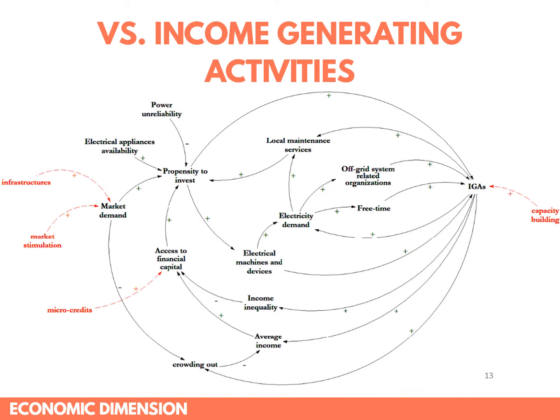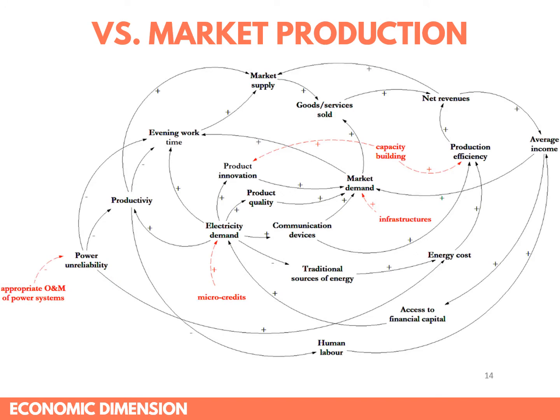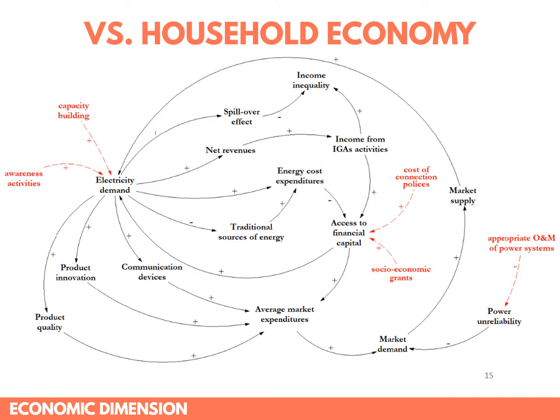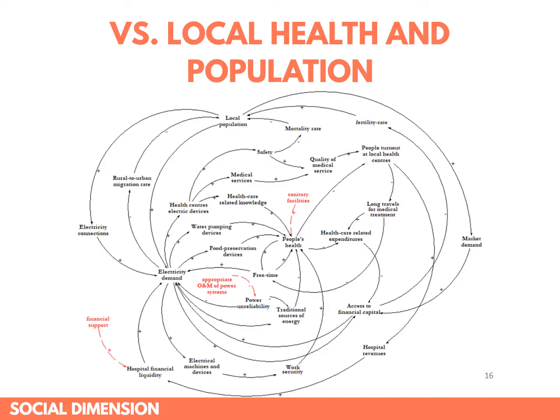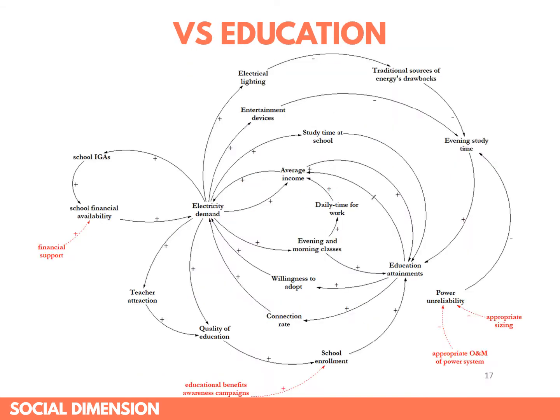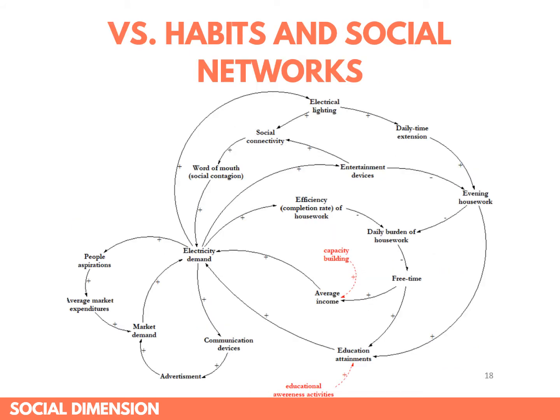The causal loop diagram between electricity demand and income generating activities. The causal loop diagram between electricity demand and market production. The causal loop diagram between electricity demand and household economy. The causal loop diagram between electricity demand and local health and population. The causal loop diagram between electricity demand and education. And lastly, the causal loop diagram between electricity demand and habits and social networks.